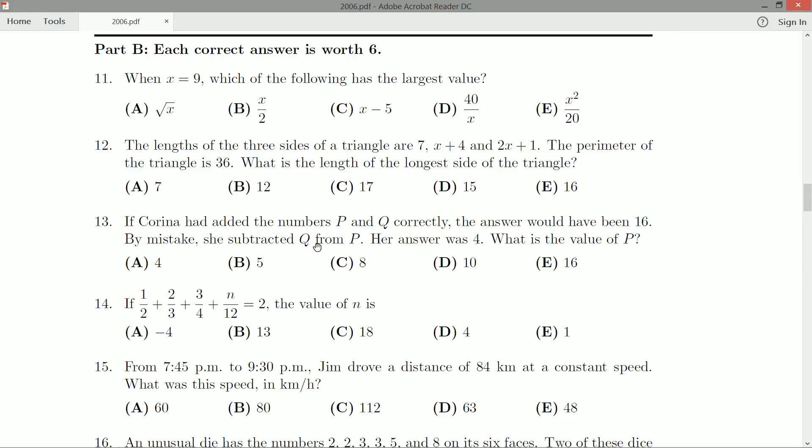We also know her mistake was P minus Q. That's the calculation she actually performed when she got 4. This turns into a pair of equations.